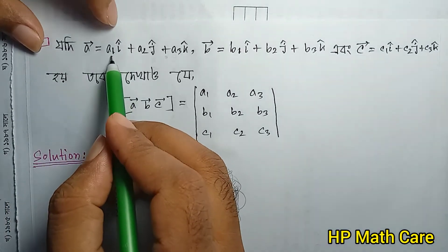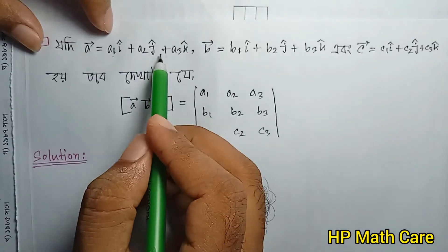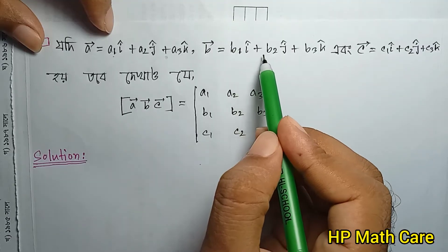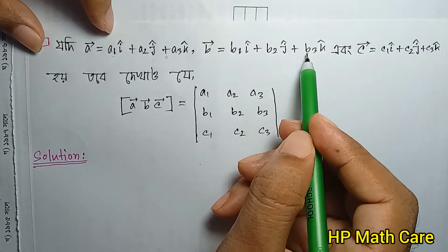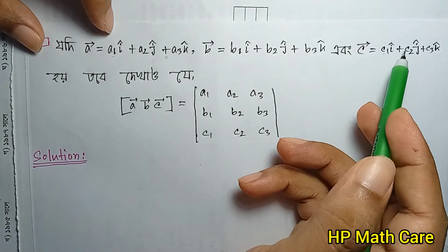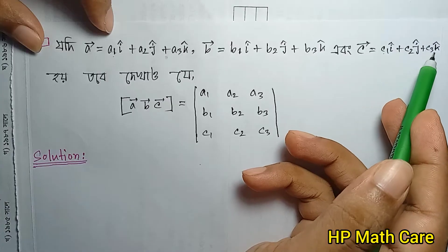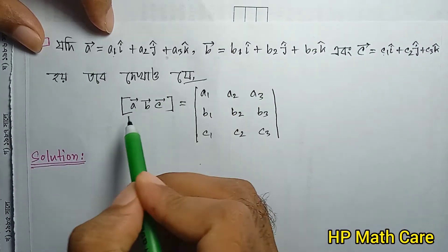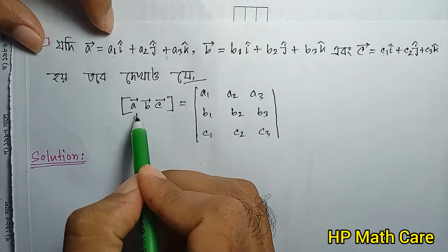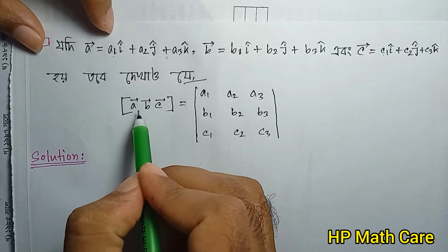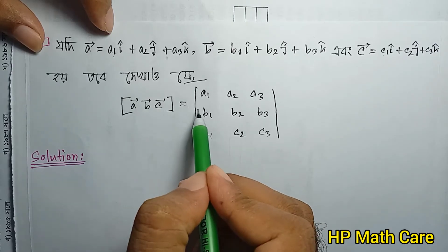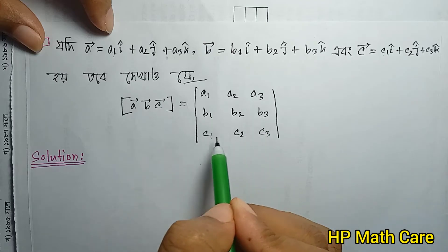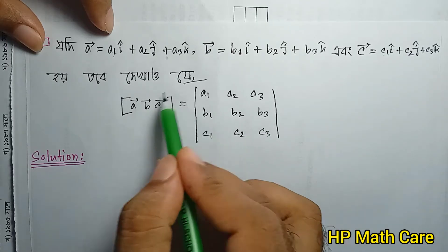We define a vector as a1i plus a2j plus a3k, b vector as b1i plus b2j plus b3k, and c vector as c1i plus c2j plus c3k. The box product formula is the determinant: a1 a2 a3 / b1 b2 b3 / c1 c2 c3. This is the formula for the box product.